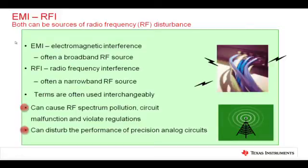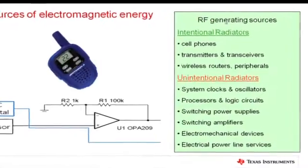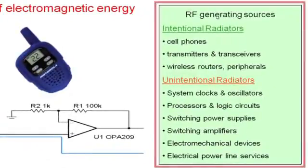EMI can disturb the performance of precision analog circuits. Sources of electromagnetic energy include intentional radiators, such as cell phones, transmitters and transceivers, wireless routers, peripherals, personal wireless electronics, and industrial wireless electronics.